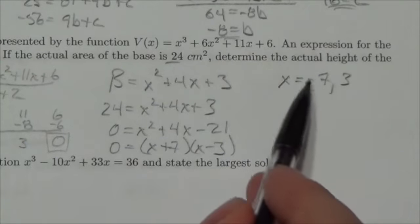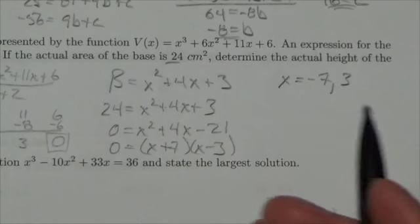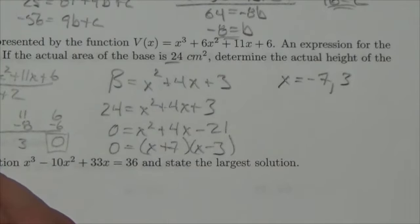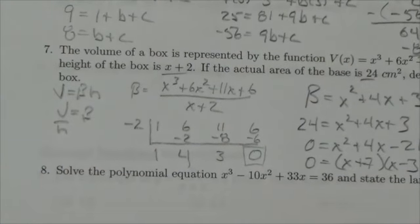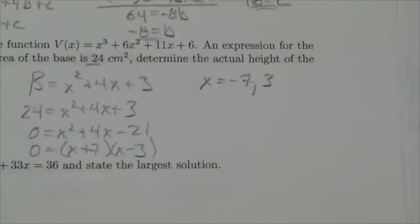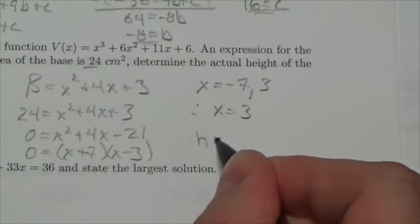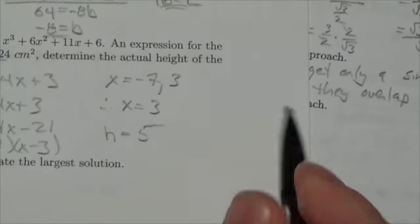In this context, though, negative 7 doesn't make any sense, because I'm looking for a value of x that's going to correspond to, or going to help me figure out what the height is of the box here. If you plug negative 7 into this, I'm going to get that the height of the box is negative 5. And that just doesn't make any sense. So therefore, the height of x has got to be 3. And the height, when you plug that value in for x here, the height ends up being 5.